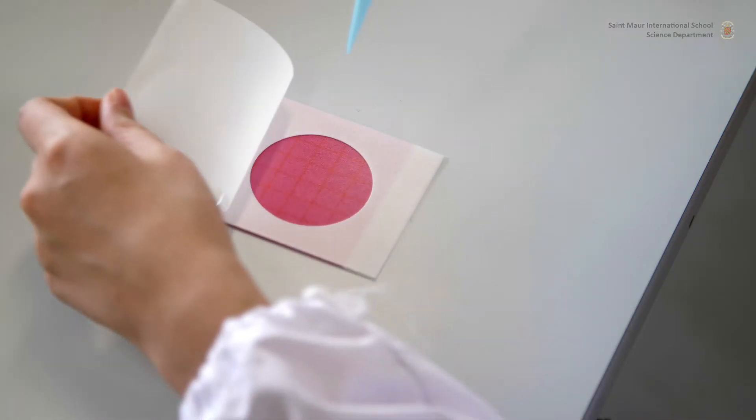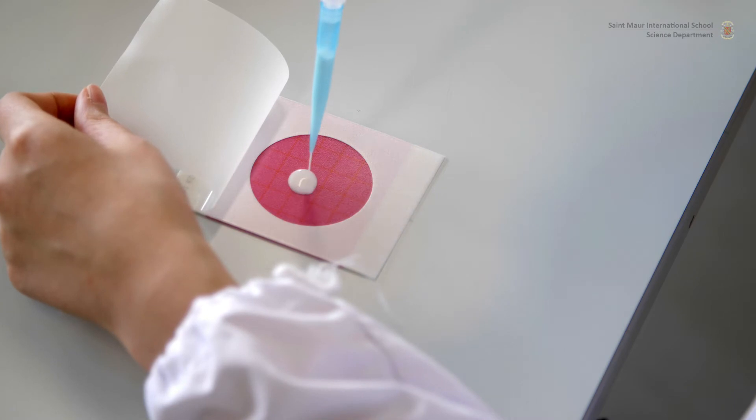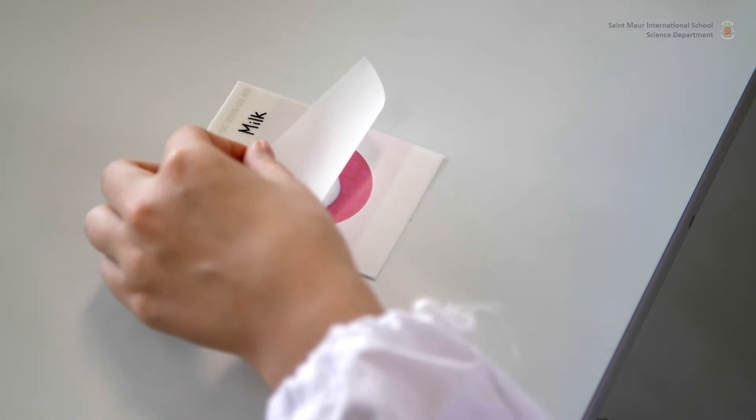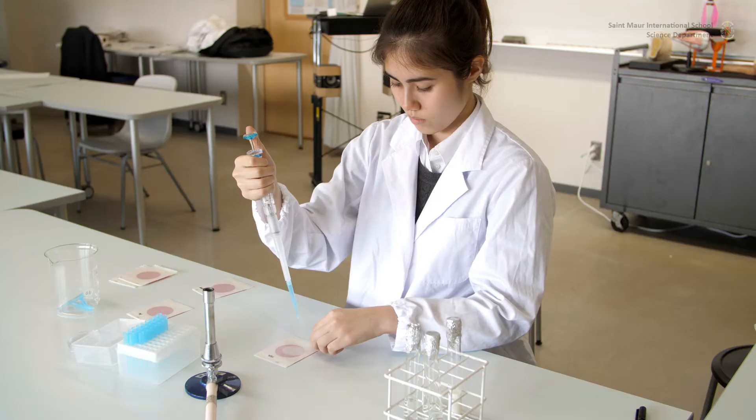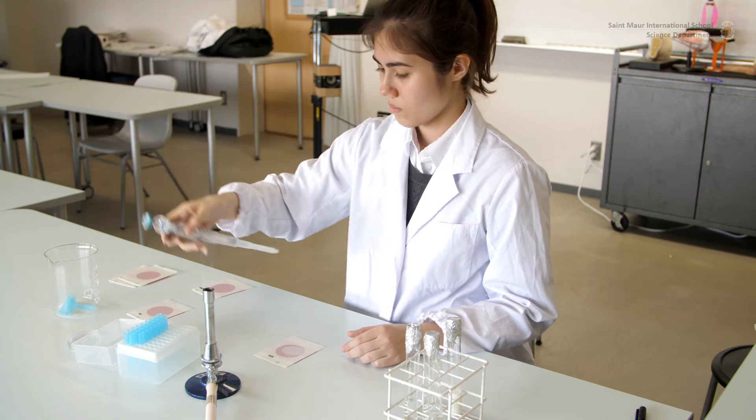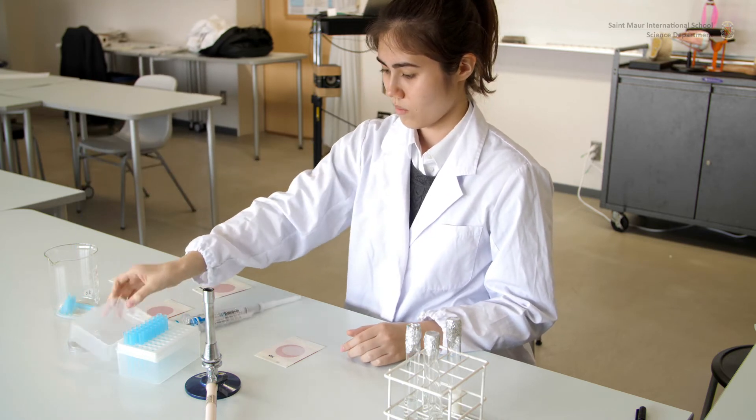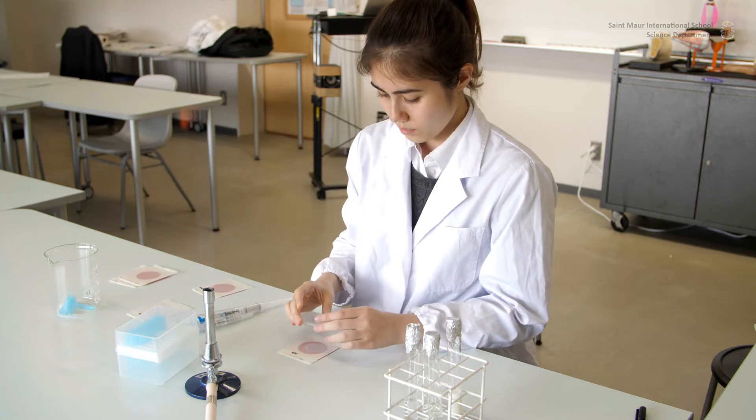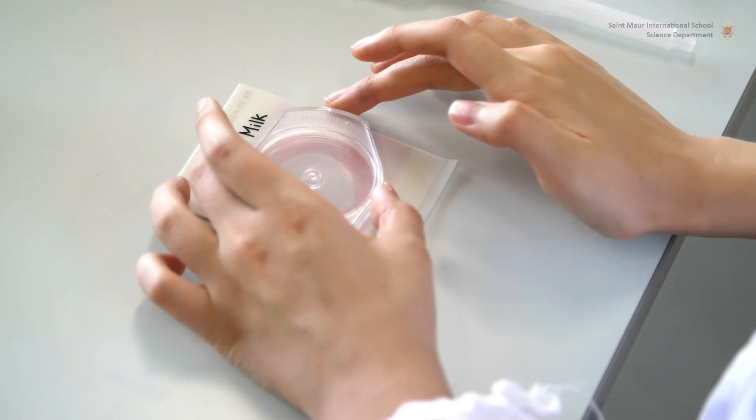For liquid inoculum, lift the cover and pipette 1 milliliter directly on the surface of the petrofilm. Place the cover back on and use the spreader to distribute the inoculum load evenly.